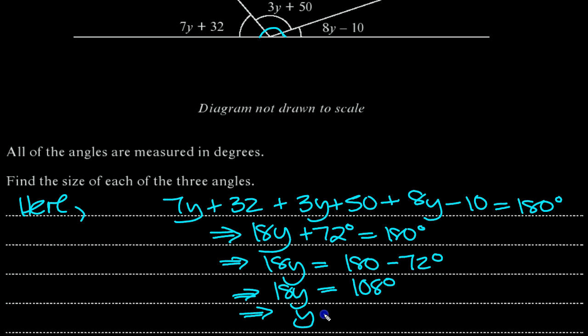So that tells us that y equals 108 over 18, which is 54 over 9. Divide by 2 top and bottom. 9 times 6 is 54, so it's 6 degrees. So y equals 6 degrees.